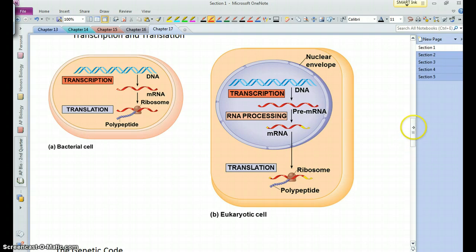And as you recall, this often takes place on the rough endoplasmic reticulum. Now notice there's an extra step that eukaryotes have - this RNA processing. The genome of eukaryotes is much more complicated than in bacteria, and in eukaryotes in our genes there's a lot of extra pieces of DNA.